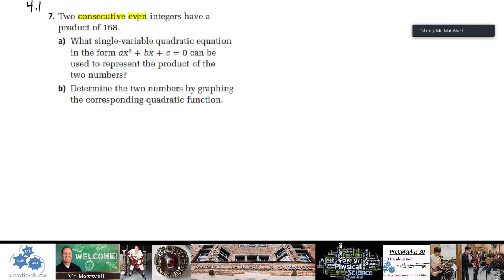Even integers - even means 2, 4, 6, 8. Integers would include the negatives, so negative 8, negative 6, negative 4, negative 2, even zero I guess would probably be part of that list, but probably not in this case because we're talking about a product. We're talking about even integers and a product of 168.